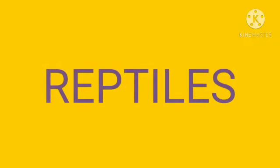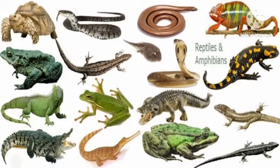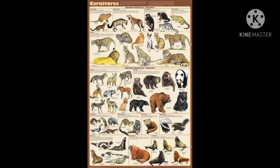Now what are reptiles? Reptiles are cold-blooded animals whose skin is covered with scales and whose young ones come out of eggs. They do not care for their young ones. For example, lizard, snake, etc.